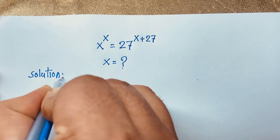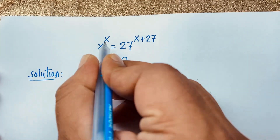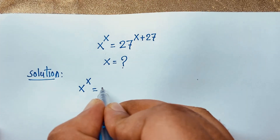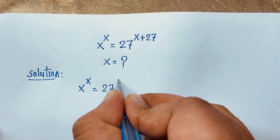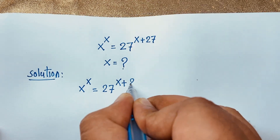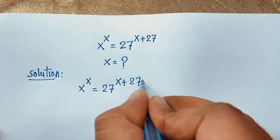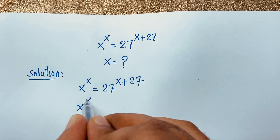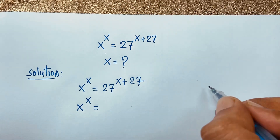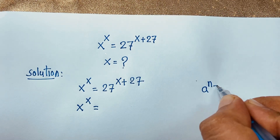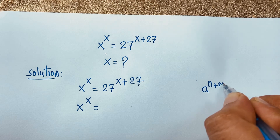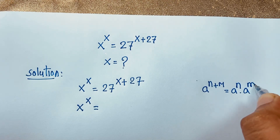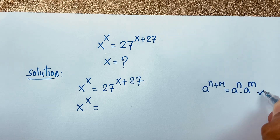I will solve this question step by step. Here we have x to the power x, and we know that here is 27 power x plus 27. At this point, we know that a to the power n plus m equals a to the power n times a to the power m. According to this law,